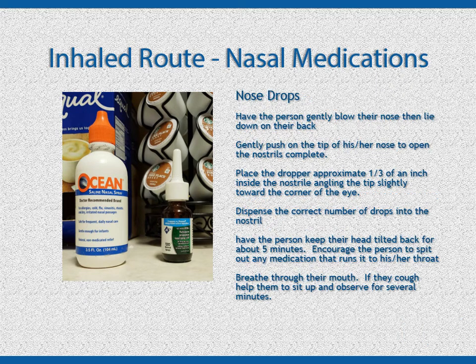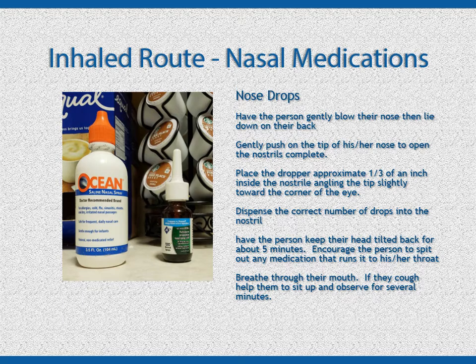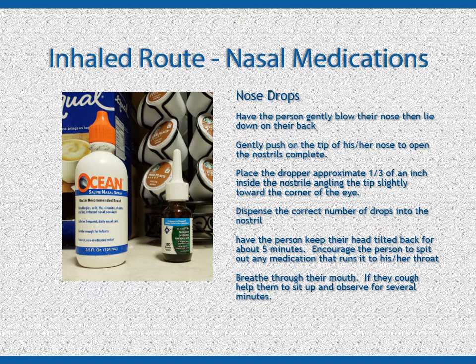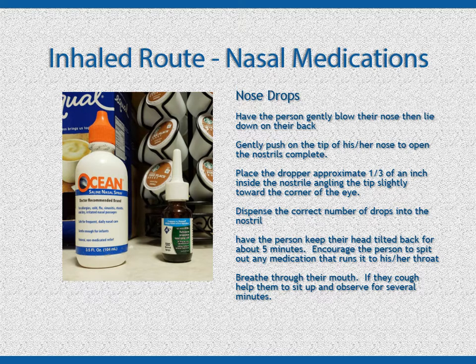Nose drops. Have the person gently blow their nose, then lie down on their back. Gently push the tip of the nose to open the nostrils completely. Place the dropper approximately one-third of an inch inside the nostril, angling the tip slightly towards the inner corner of the eye. Dispense the correct number of drops into each nostril. Have the person keep their head tilted back for about five minutes. Encourage the person to spit out any medication that runs into the throat. Have the person breathe through their mouth. If they begin to cough, help them sit up and observe for several minutes for possible breathing problems.